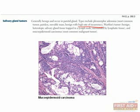The last tumor we'll mention is the mucoepidermoid carcinoma. This type of cancer has three cell types: squamous, intermediate, and mucus producing, and is the most malignant salivary gland tumor. In this image you can see mucus production toward the center of the glands.